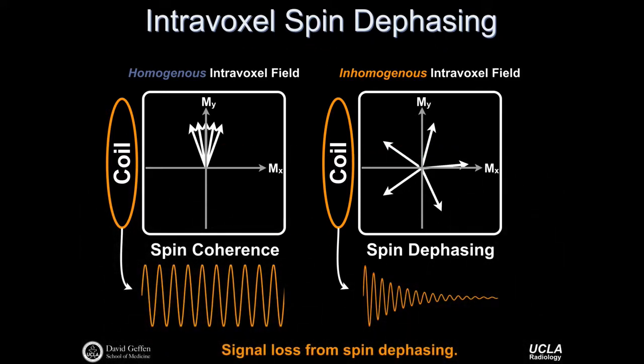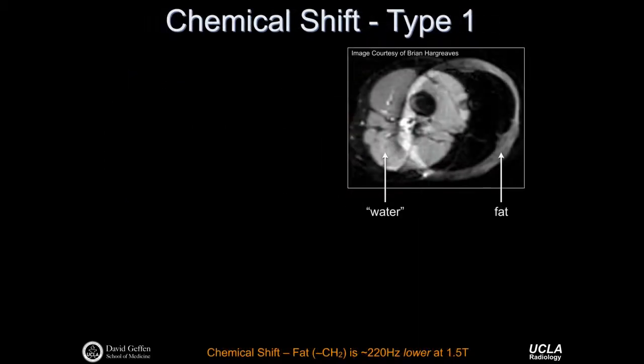Signal loss occurs from this spin dephasing. Generally we want strong signals that dominate above the noise floor for producing higher quality images.